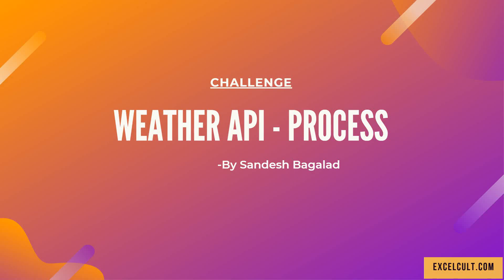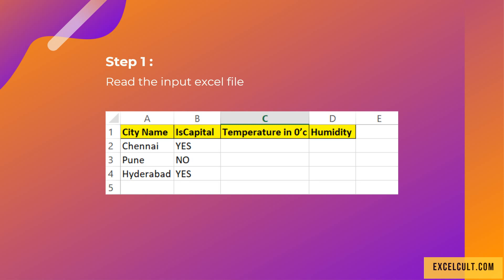Here's our challenge, it's called Weather API Process. We will be given an input file with columns: city name, is_capital, temperature, and humidity. Looking at the sample data, we can see Chennai has is_capital as 'yes' and Hyderabad has is_capital as 'yes'. You have to give the most priority to these cities, then move on to other cities where is_capital is 'no'.